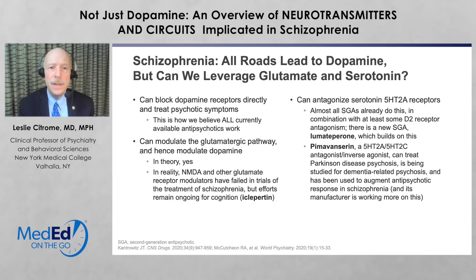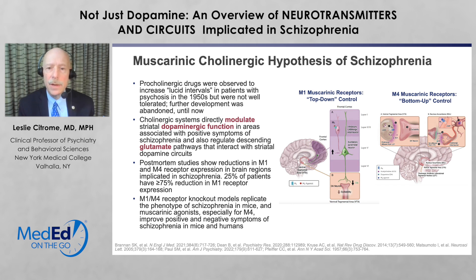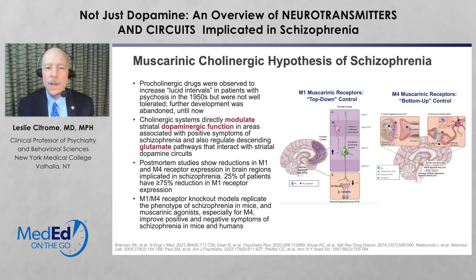Pimavanserin is used to treat Parkinson's disease psychosis and is in development to be used adjunctively to antipsychotics in schizophrenia. There's also the muscarinic cholinergic hypothesis of schizophrenia, which has been around since the 1950s. Cholinergic systems directly modulate dopaminergic and glutamatergic pathways. If we can modulate this, we can perhaps control psychotic symptoms without directly blocking postsynaptic dopamine D2 receptors. There is a medication in development in phase three — a combination of xanomeline, an M1/M4 receptor agonist, and trospium, a muscarinic antagonist.